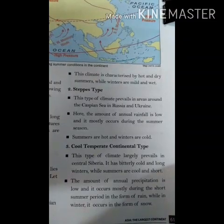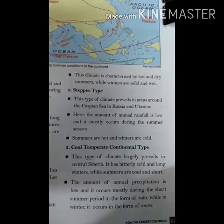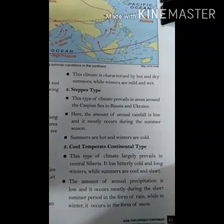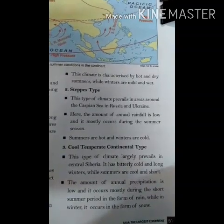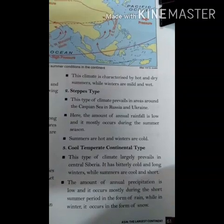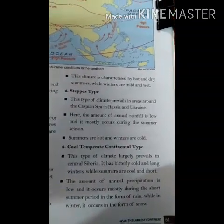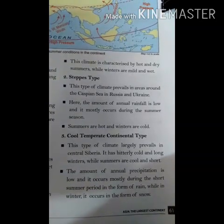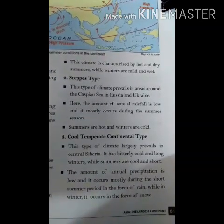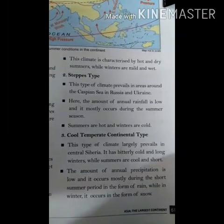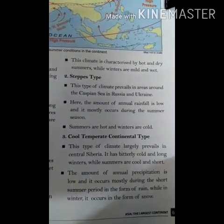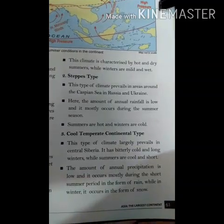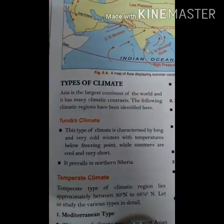Cold temperate continental climate is found in central Siberia. It has bitterly cold and long winters, with cool and short summers. The amount of precipitation is low and occurs mostly during the short summer period as rain, and in winter as snow.